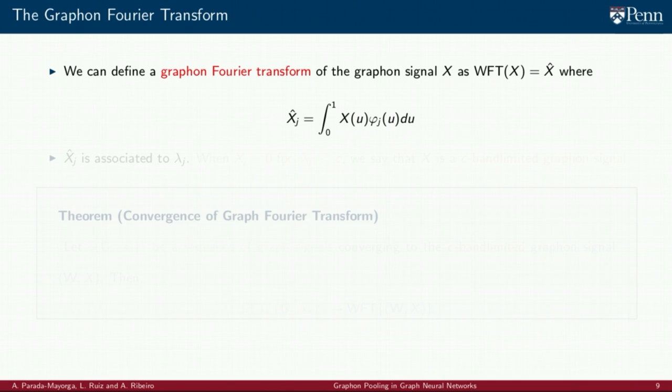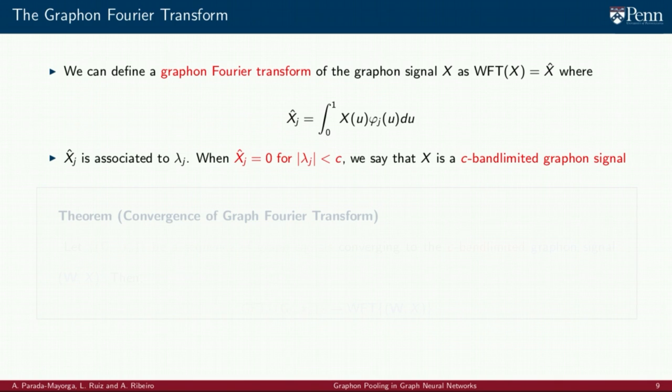The coefficients of this expansion, calculated as the integral between the signal x and the eigenfunction phi sub j are called the graphon-Fourier coefficients or graphon-Fourier transform of x and are referred to as x hat sub j. Each coefficient is associated with an eigenvalue. When only the coefficients associated to the largest eigenvalues are different from zero, we say that the given signal x is band-limited.